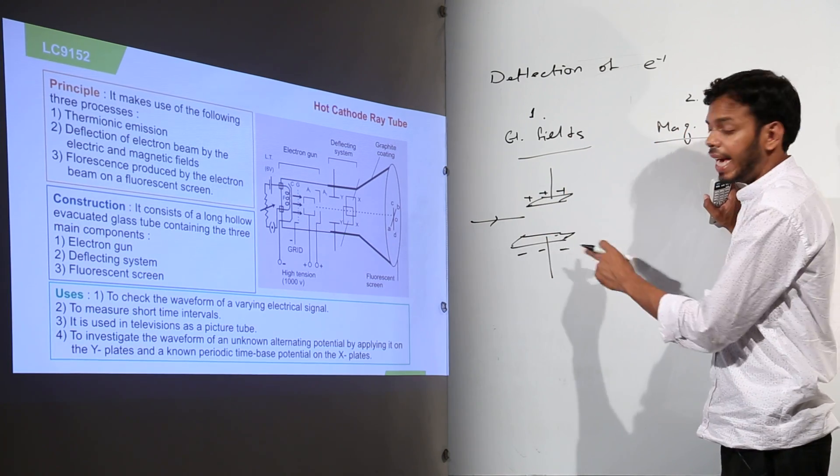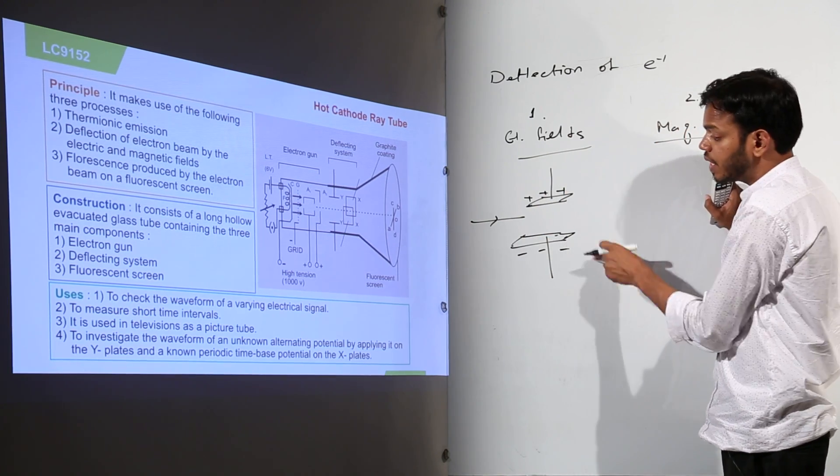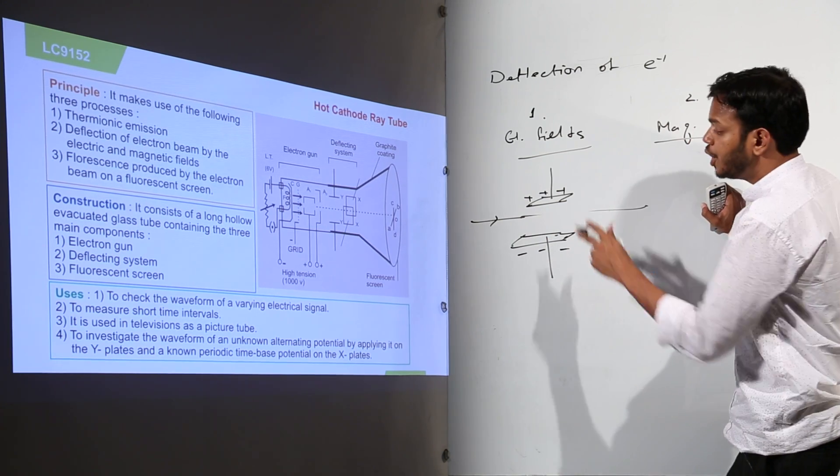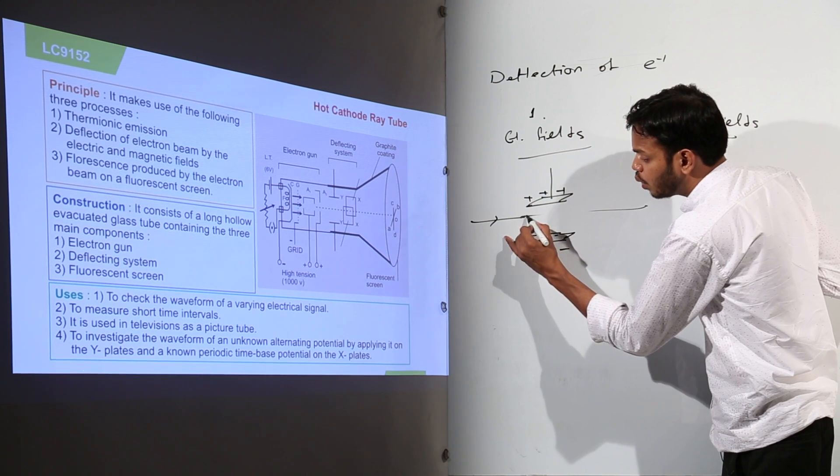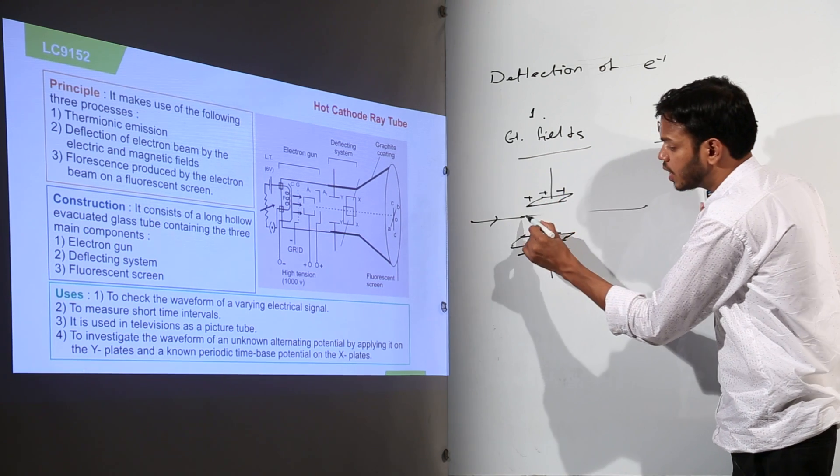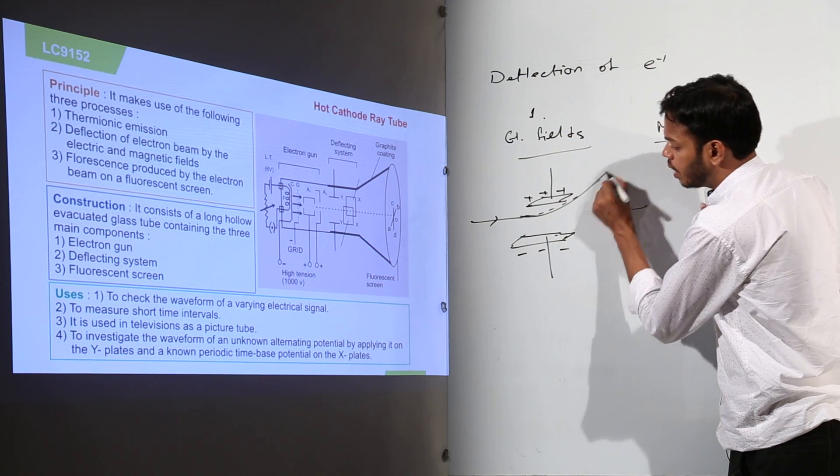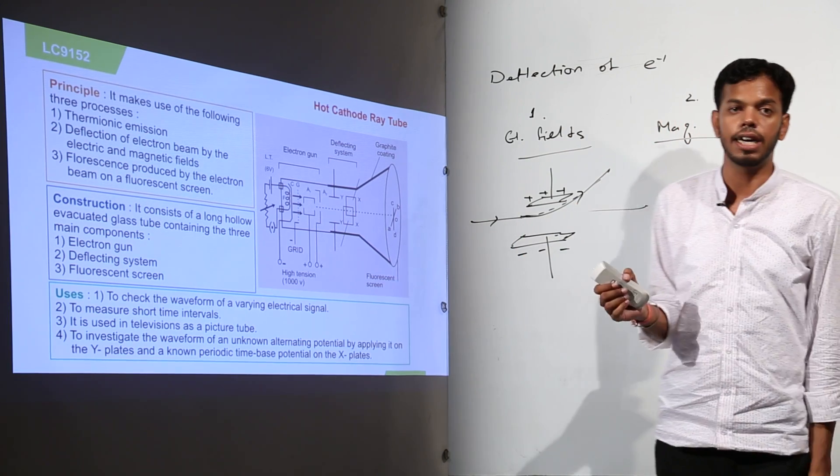Electrons are negatively charged particles. That means they have a tendency to get attracted towards the positive part whereas they also have a tendency to get repelled by a similar charge which is negative charge. So this beam in the absence of the charge provided on the plates would have gone straight. But due to the presence of charges on the plate, it is going to get attracted towards the positive point and repelled by the negative point. So the path gets curved.